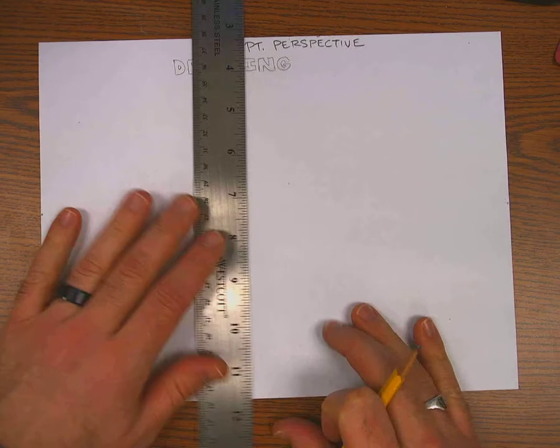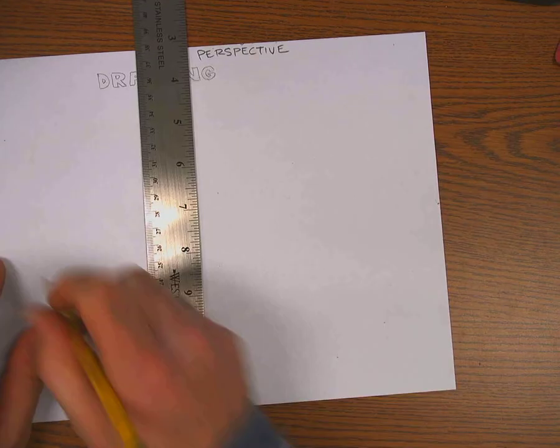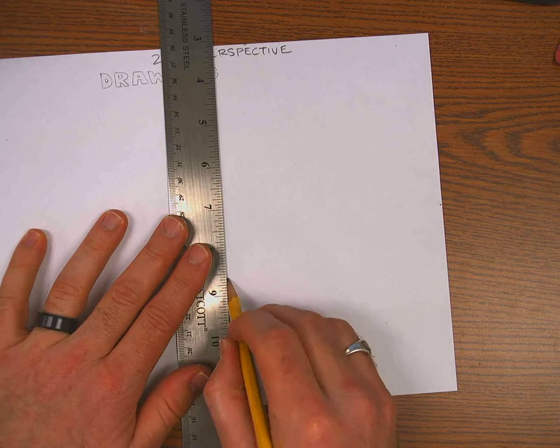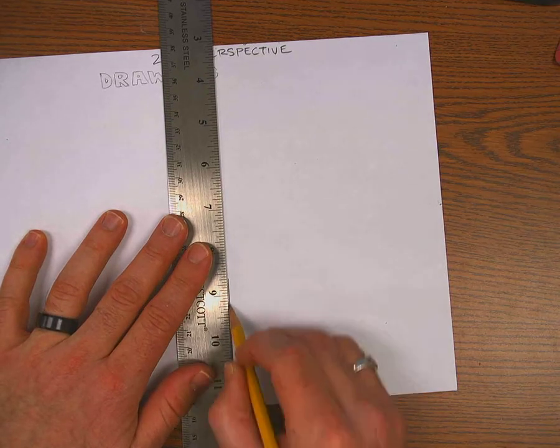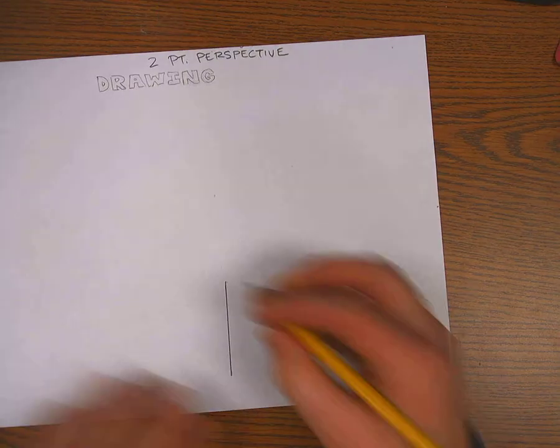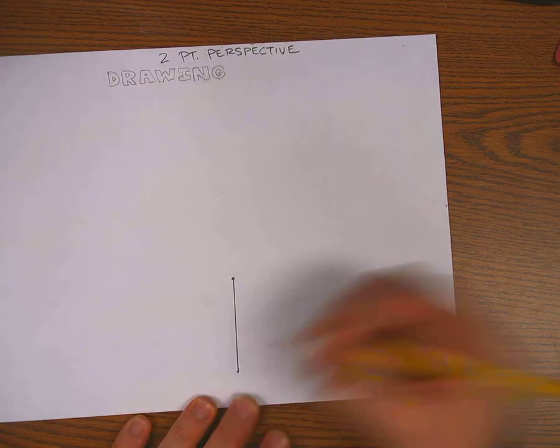And I want to do this word below the horizon line, so the horizon line would connect those two dots. I'm going to put one vertical line right in the middle. I'll make that line about two inches. Put a dot on the top and the bottom.